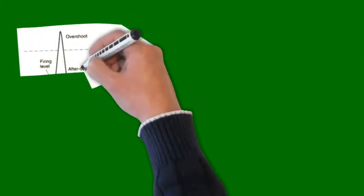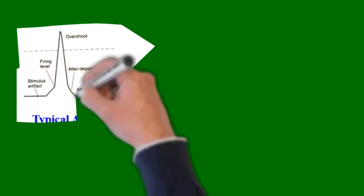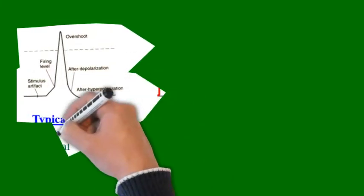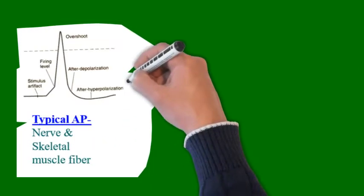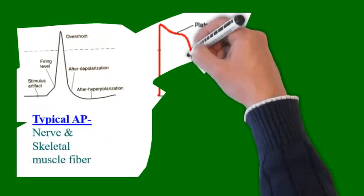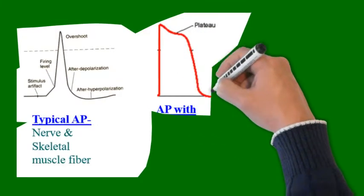Now, types can also be on the basis of excitable tissue. For example, typical action potential with spike and overshoot is present in nerve and skeletal muscle fiber, while action potential with plateau